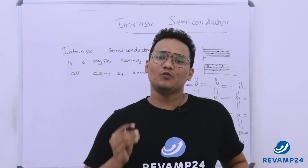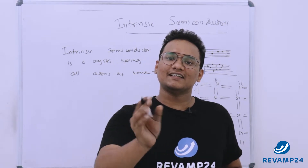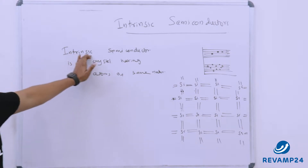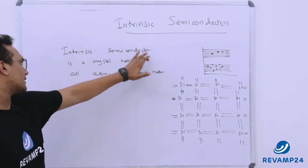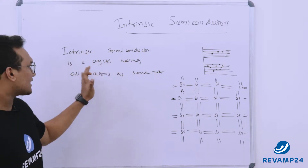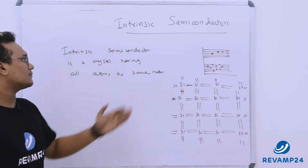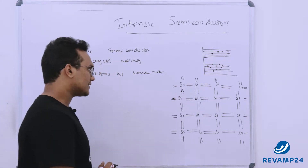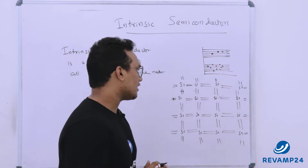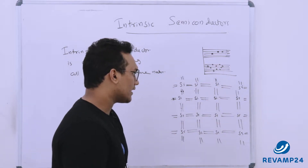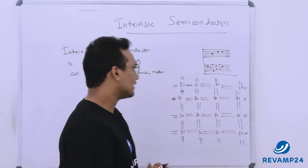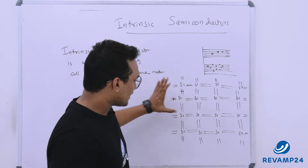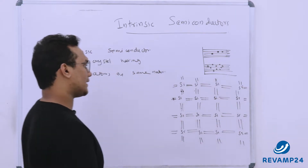In this video I will explain what an intrinsic semiconductor is. We will see the definition first. An intrinsic semiconductor is a crystal having all atoms of the same nature. For example, this crystal is made up of silicon — everywhere you can see only silicon. So it is a crystal made up of the same atom.